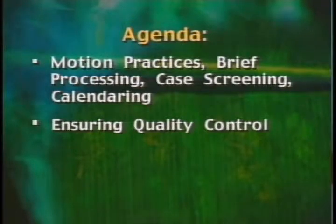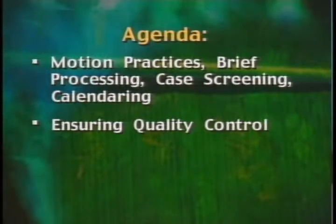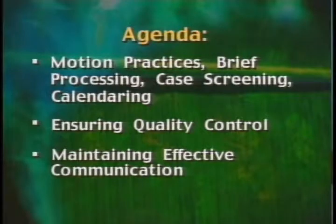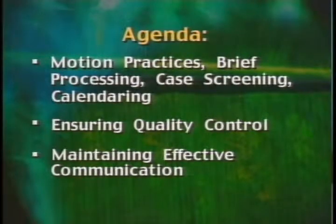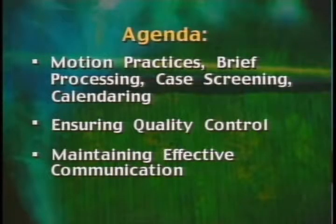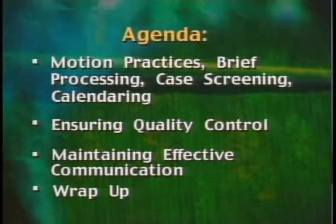Our second panel discussion will focus on the important issue of quality control — with all the information required during this period, what are the challenges and what measures has your circuit taken to ensure accuracy? Finally, we'll cover communication: how do you keep attorneys and internal staff aware of changes in the FRAP rules, local rules, and IOPs? How do you deal with pro se filers? And where do you go to get additional or clarifying information? We'll end with a wrap-up.